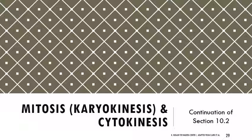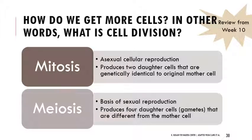Getting specifically into mitosis and cytokinesis. The way that we get more cells is through different types of cell division — mitosis and meiosis. Mitosis is asexual, producing two identical cells. Meiosis is the basis of sexual reproduction, producing four haploid gametes that only have one set of DNA each, and they are all different from one another. For now just focus on mitosis and producing identical cells. Mitosis is divided into different phases — keep the term PMAT in mind.